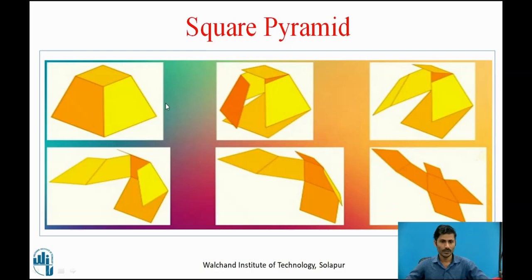For the development of this square pyramid, we need to cut the pyramid at one of the inclined edges. After that, as you can see in the second figure, it is cut at this inclined edge and we can unroll all the surfaces onto the development plane. In the third, fourth, fifth, and sixth diagrams, you can see all the triangular surfaces kept on the development plane, including the top and bottom surfaces. This is called the development of the pyramid.